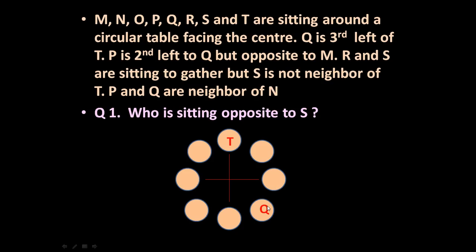P is second left to Q. This is Q, this is the right side of Q, this is the left side of Q. P is second left to Q, so counting 1, 2, P will occupy this position. P is second left to Q but opposite to M, which means opposite to P is M, so M will occupy the position opposite to P.